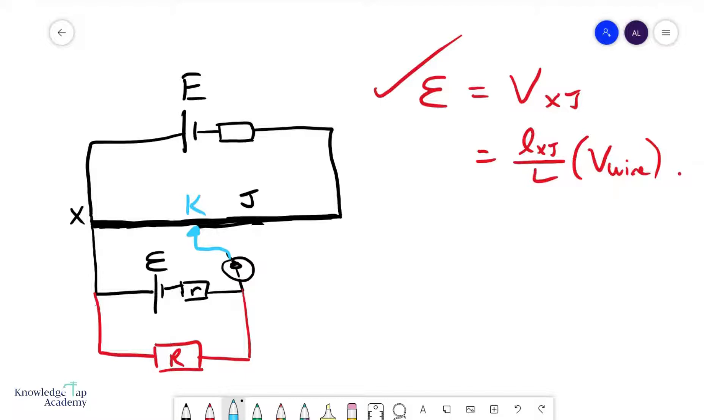The reason why this happens is because when you connect this fixed resistor R, you're now going to get a current that flows within this secondary circuit. So your internal resistance now has a potential difference across it, which means that your effective potential difference across this chain is no longer E. It is equal to E minus IR, which is smaller than E. And that is why your balance length will shift to the left.